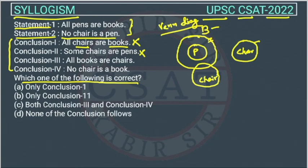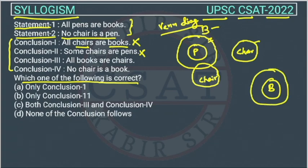Conclusion 3: all books are chair. This would mean every book is a chair, but that's not supported. If it were true, all pens would also become chairs, which contradicts the diagram. This conclusion is also wrong.